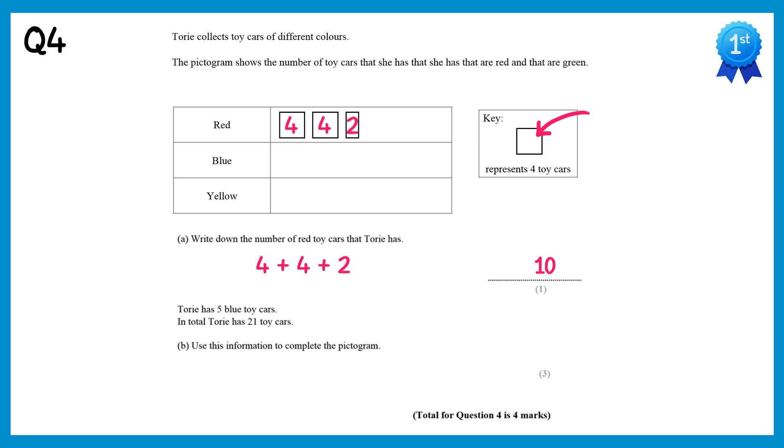We then need to complete the pictogram. We're told Tory has 5 blue cars, so if we draw 1 square that's worth 4, we only need 1 more, so this would be a quarter of a square. Then we're told that Tory has 21 toy cars in total. So if we do 21 take away 10 and take away 5, that's taking away the red cars and blue cars, we end up with 6. So there are 6 yellow cars. If we draw 1 square that's 4 cars, and then we need half a square for another 2 cars to make 6.